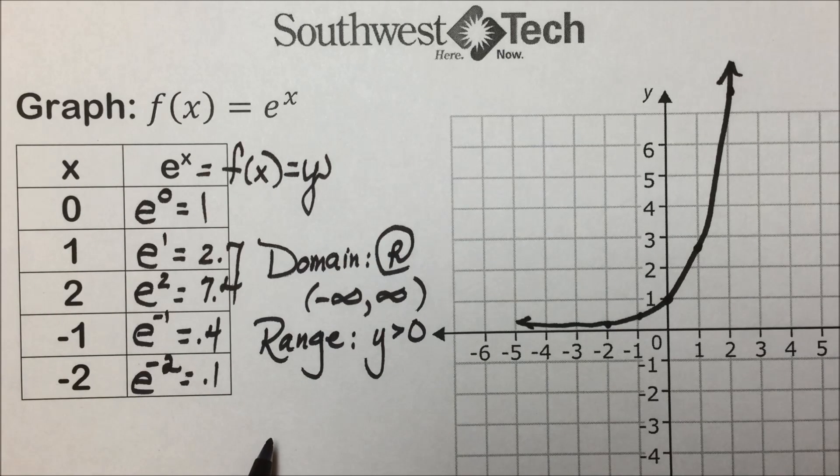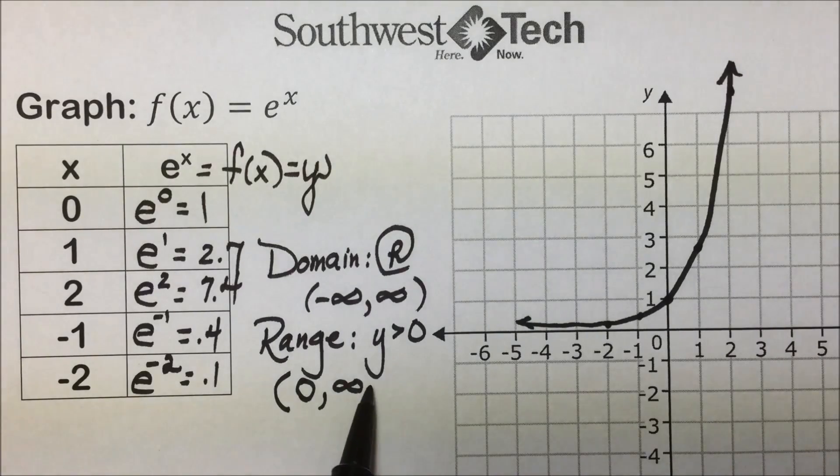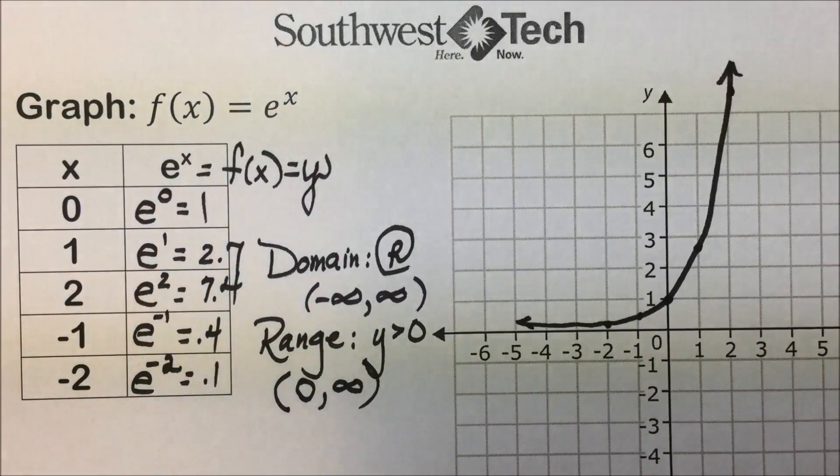So our y would be greater than 0. If we use interval notation, we want them greater than 0 but not equal to, so we'd use a parenthesis with our 0 and ever increase towards positive infinity.